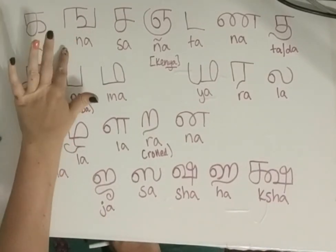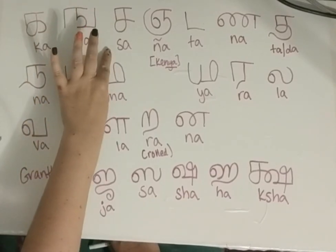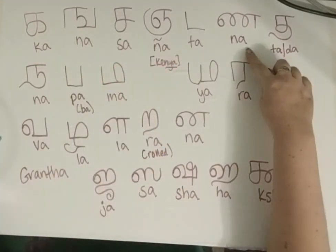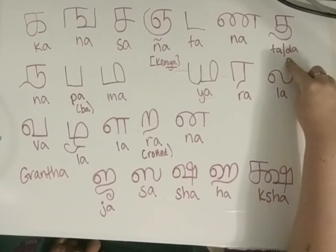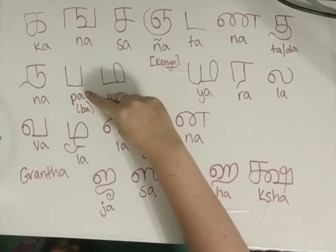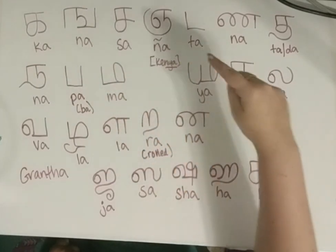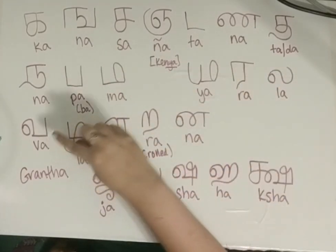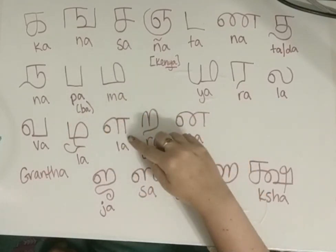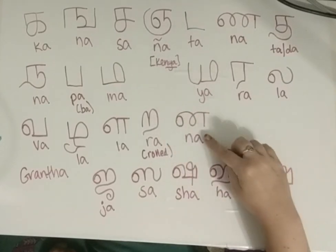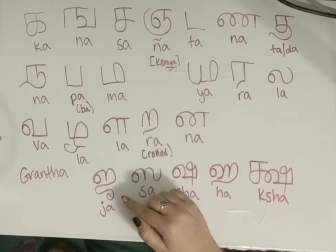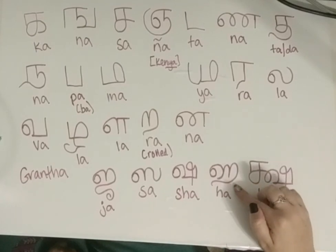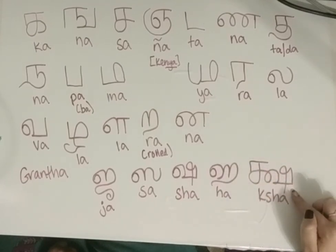We have: Ka, Na, Sa, Nya, Ta, Na, Ta — remember that retroflex one? — Na, Ba, Ma, Ya, Ra, La, Va, La, La, Ra, Na, Cha, Sa, Sha, Ha, Sha. Did you practice?